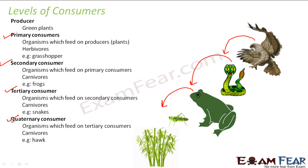Now who will eat this hawk? Once the hawk dies, the decomposers will decompose it. So the entire story starts with the producers who produce food, then comes a wide variety of consumers who consume this food either directly or indirectly from the producers, and then come the decomposers who decompose the dead bodies of all the producers and consumers. Together, producers, consumers, and decomposers form the biotic component of an ecosystem.